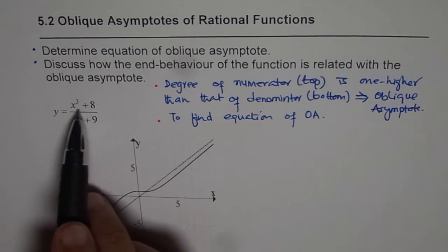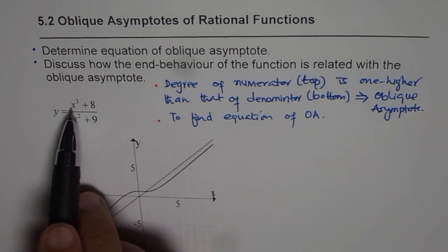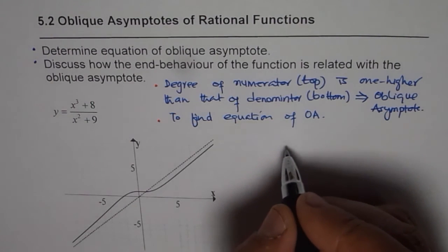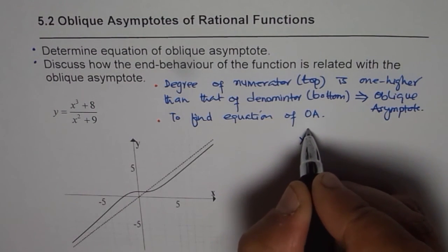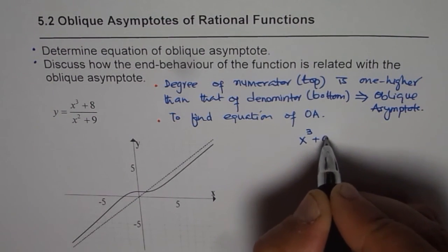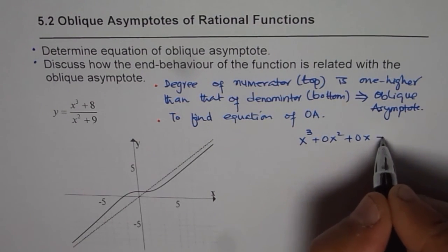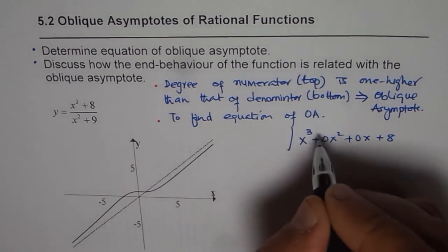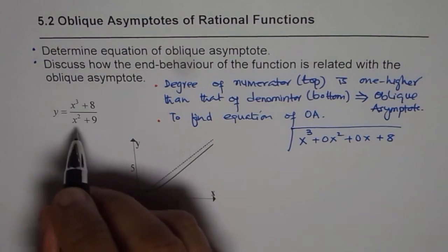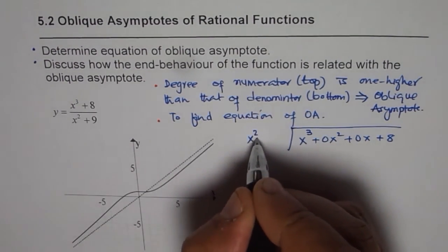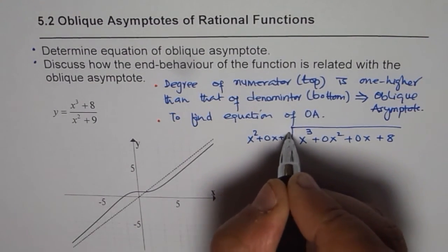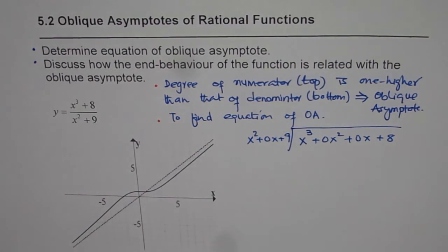Well, there are a few missing terms, so we will put the placeholders there. So this is an interesting example. We get x cubed plus 0x squared, x is also missing, so 0x plus 8. This is to be divided by x squared plus 0x plus 9. Now, let us divide this and try to get our answer.